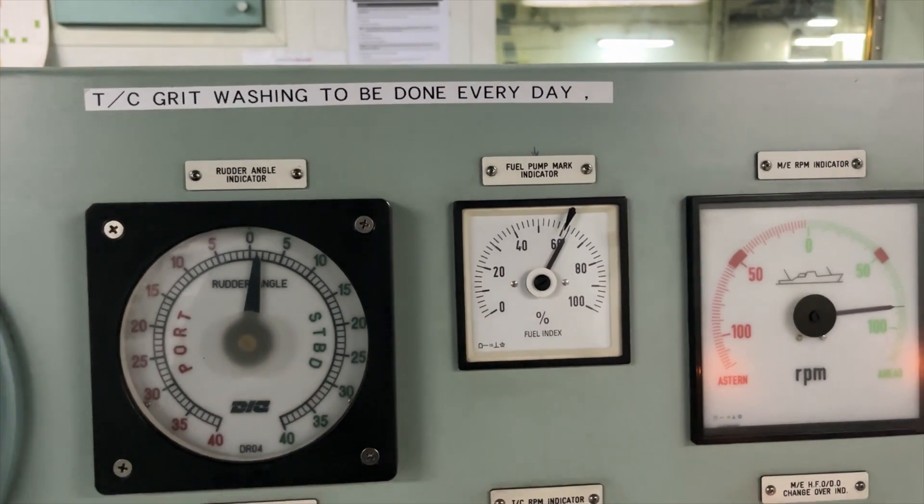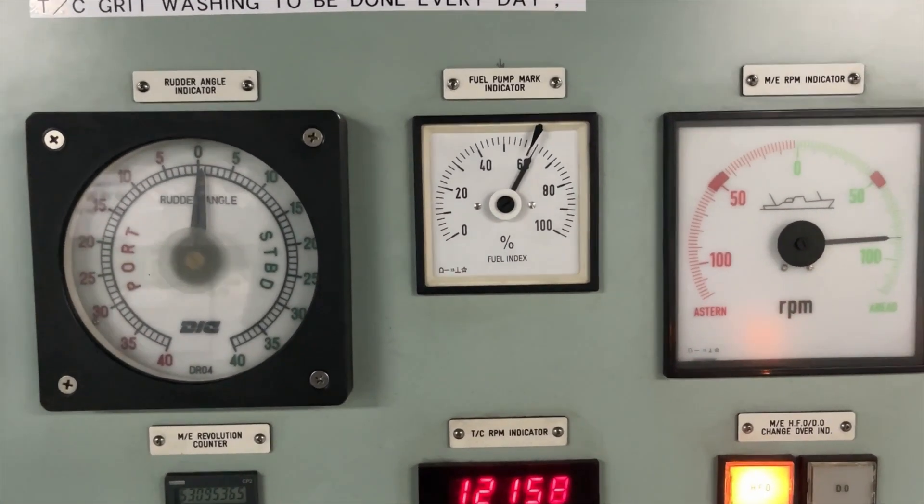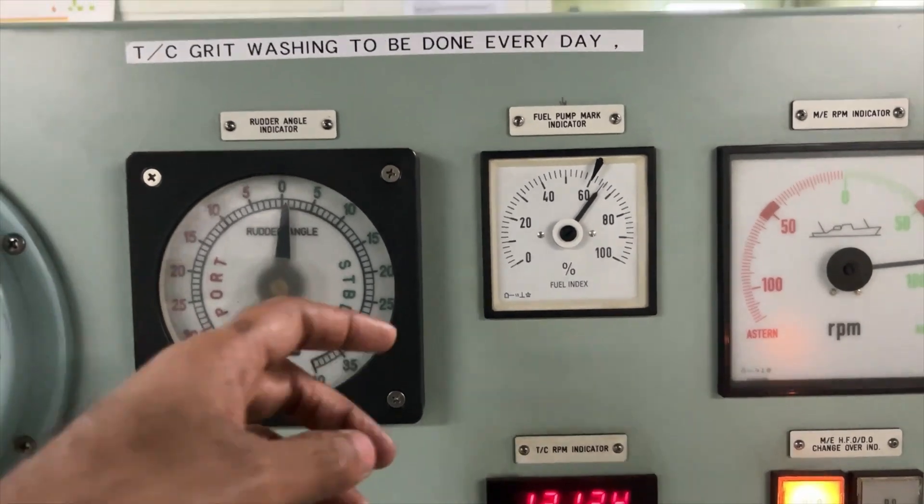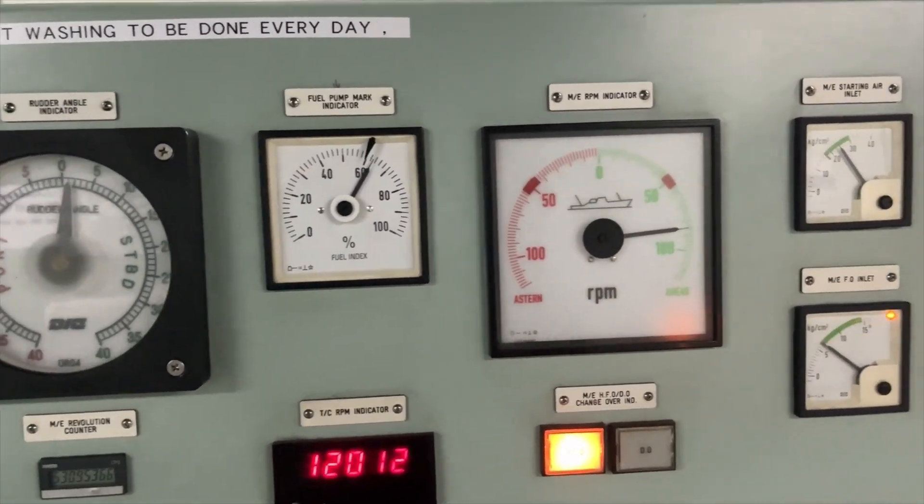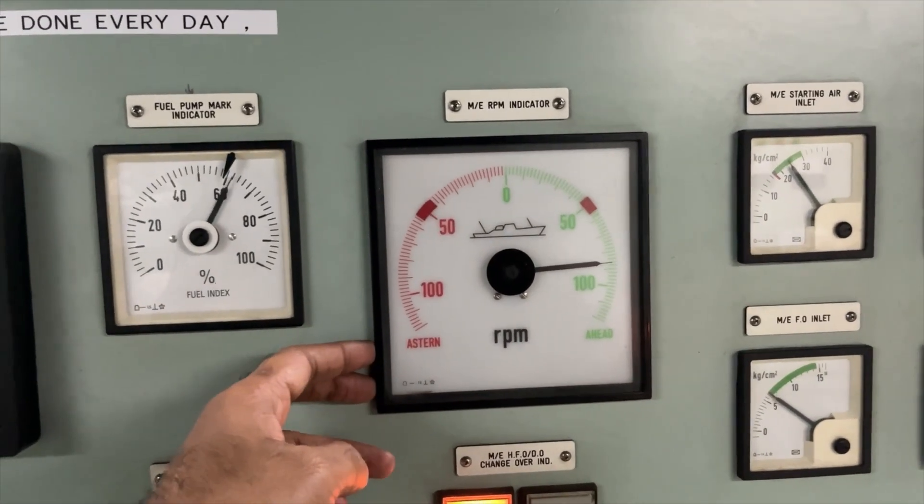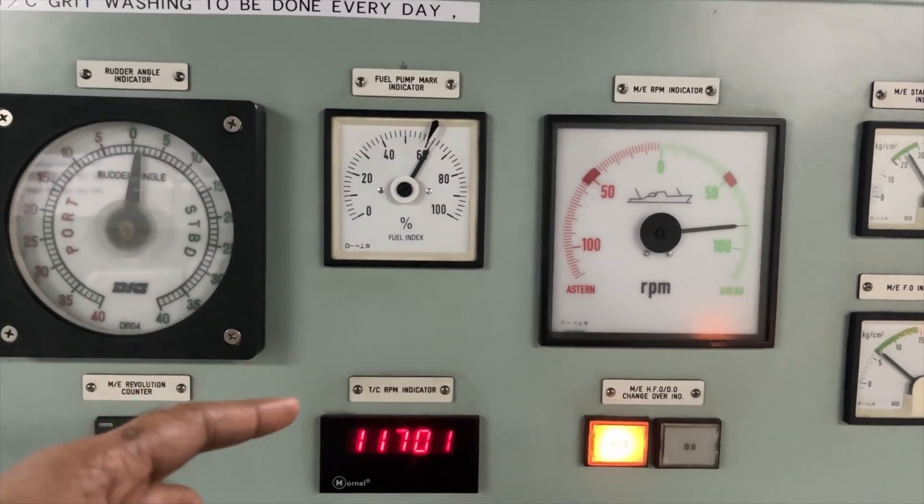This is your fuel pump rack indicator. This is the one which is indicating how much percentage of the fuel rack is pressed. This is your main engine RPM indicator, whatever right now because of rough weather the fluctuation is too much.